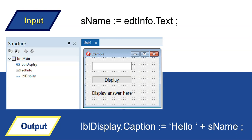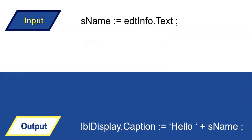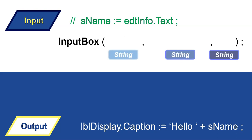There is a way to make this program work without an edit box and without the label — just the button. We're going to use what's called an InputBox. This is a special function in Delphi, and as we said before, if there are multiple pieces of information — what we call parameters — you separate them by commas. We're going to give three arguments to this InputBox, and all three arguments are strings.